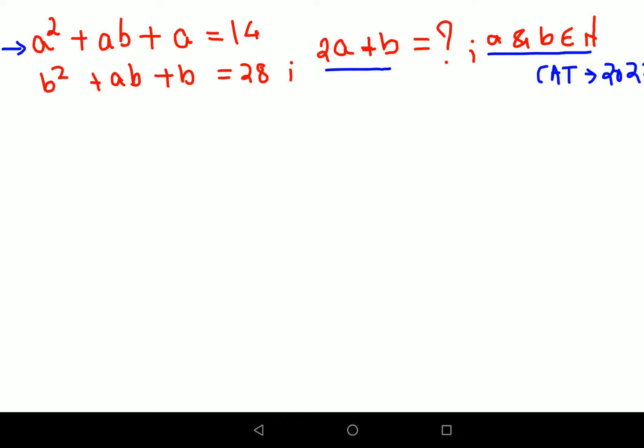Now in this case what we will do is let's try and add both of these equations. So I am left with A², then I have AB plus AB so that gets you 2AB plus A plus B² plus B equals to 14 plus 28, that comes out to be 42.